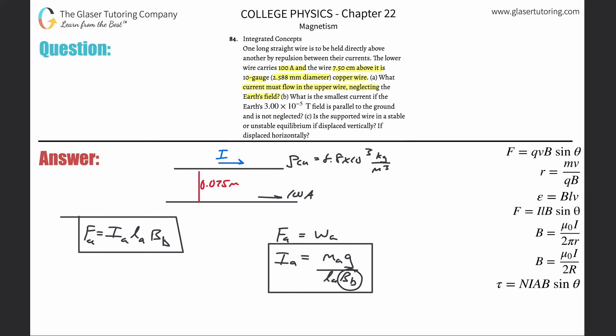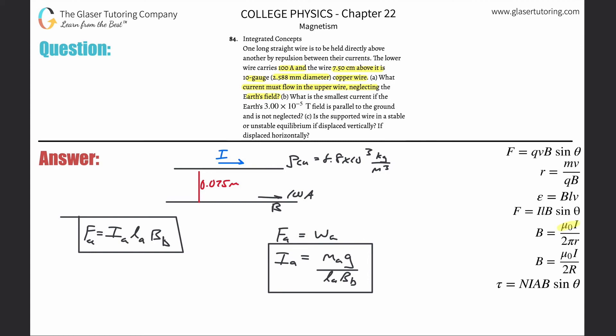Can we find the magnetic field that wire B is producing 0.075 meters above? Surely we can — we use the formula for the magnetic field of a long straight wire. We've seen that plenty of times. So I'm going to substitute that expression in.